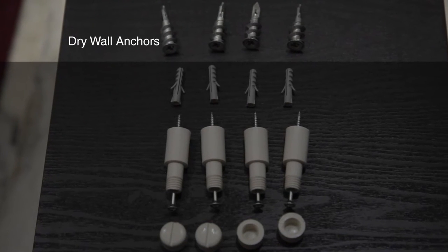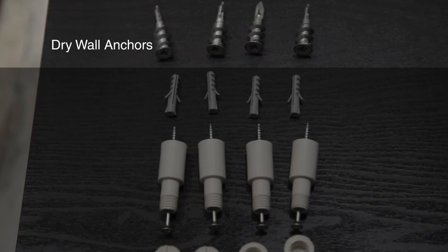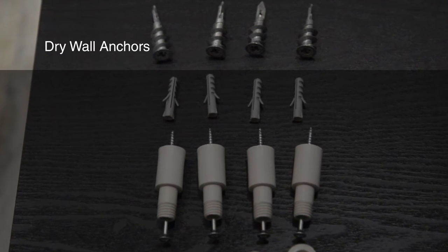For drywall installation, screw the drywall anchors into the wall. If you hit a stud, drill a hole using a 1⅛ inch bit and do not use anchors.